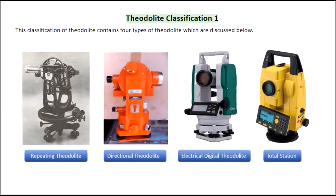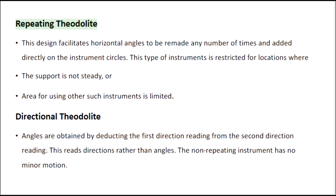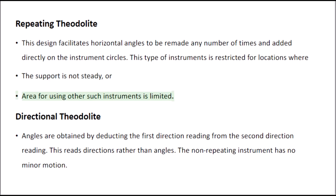Theodolite Classification 1. Repeating Theodolite: This design facilitates horizontal angles to be remeasured any number of times and added directly on the instrument circles. This type of instrument is restricted for locations where the support is not steady or the area for using other instruments is limited.